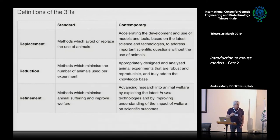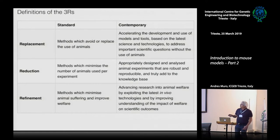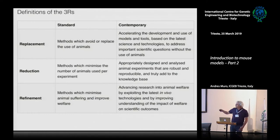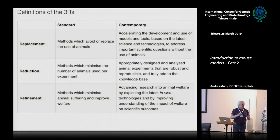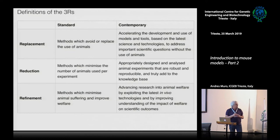In some cases we can replace our studies with cells; in others it is not possible. When replacement is not possible, we cannot replace with other technologies, but we can still reduce and refine. Reduction means using methods that minimize the number of animals used per experiment. This is not only a matter of statistics — it is a matter of experimental design. We need to obtain the minimum group size to get statistically significant results.